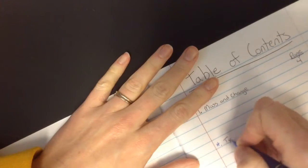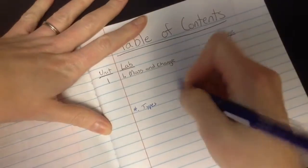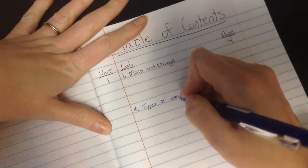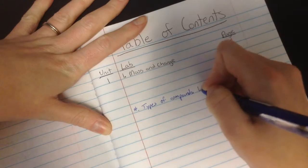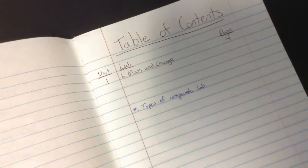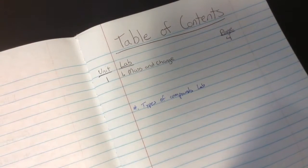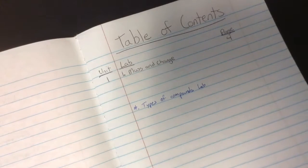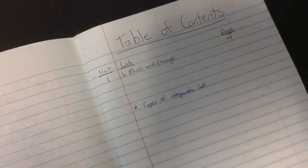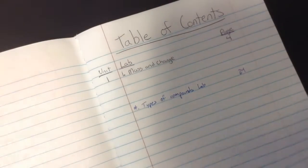This is the Types of Compounds Lab, and then whatever page yours is going to be on, this one doesn't even have very many page numbers, looks like 24 is going to be the page number.